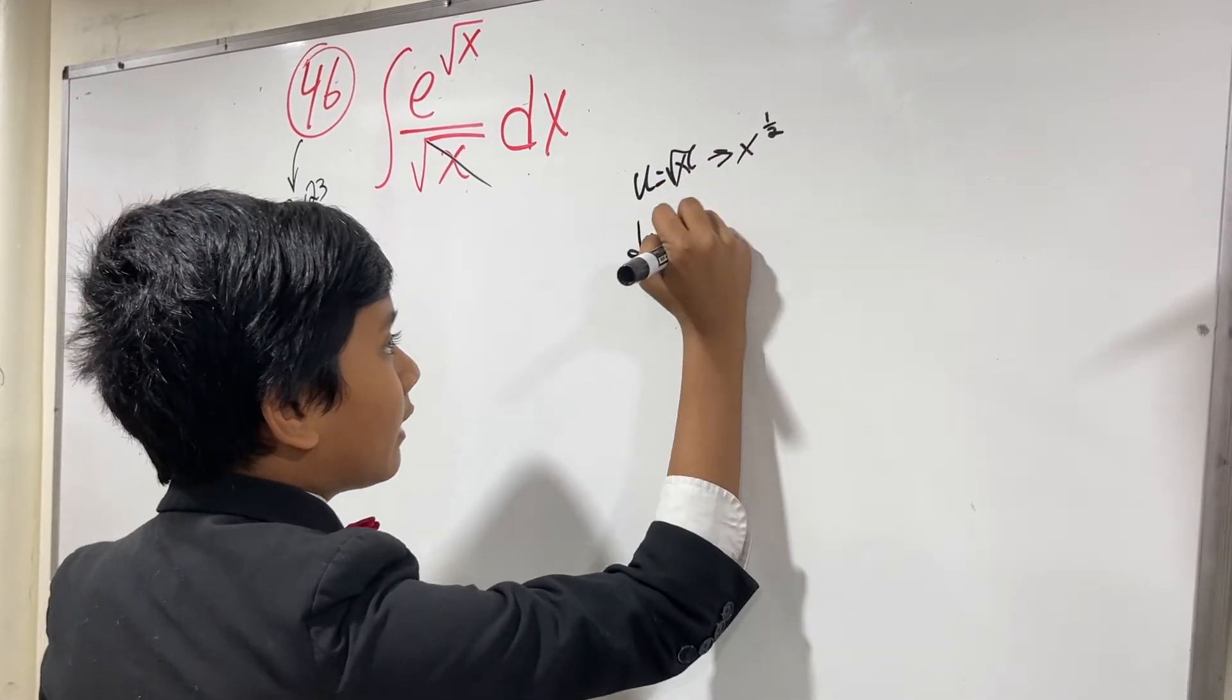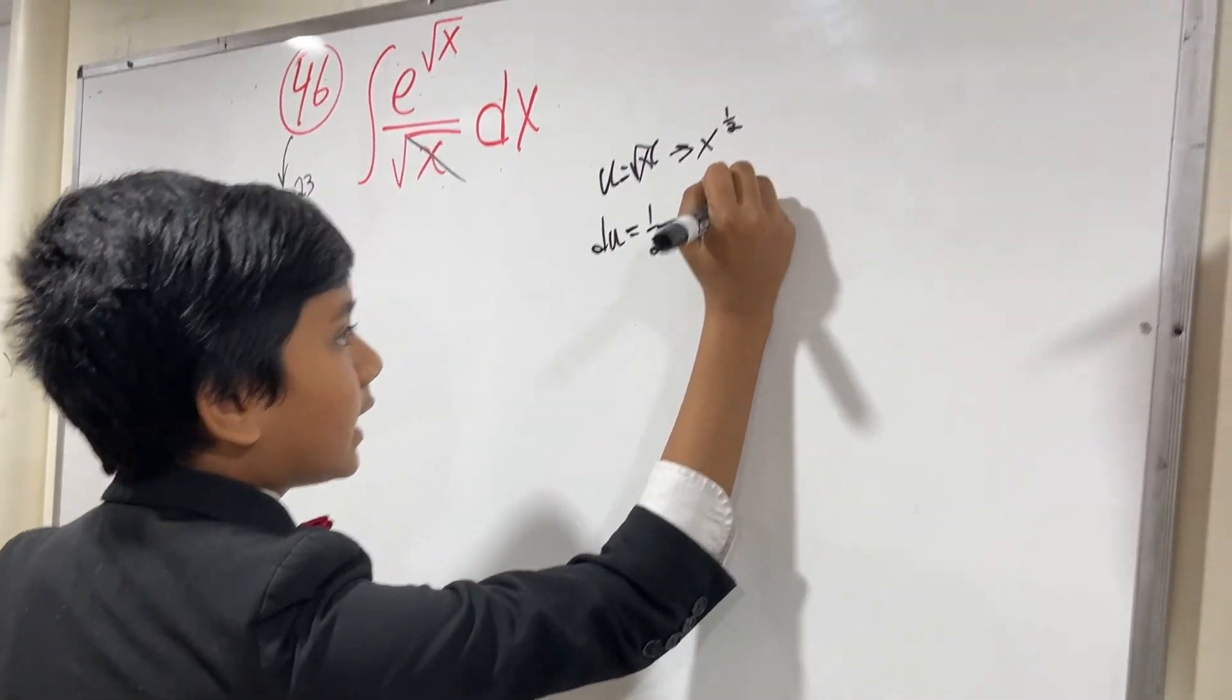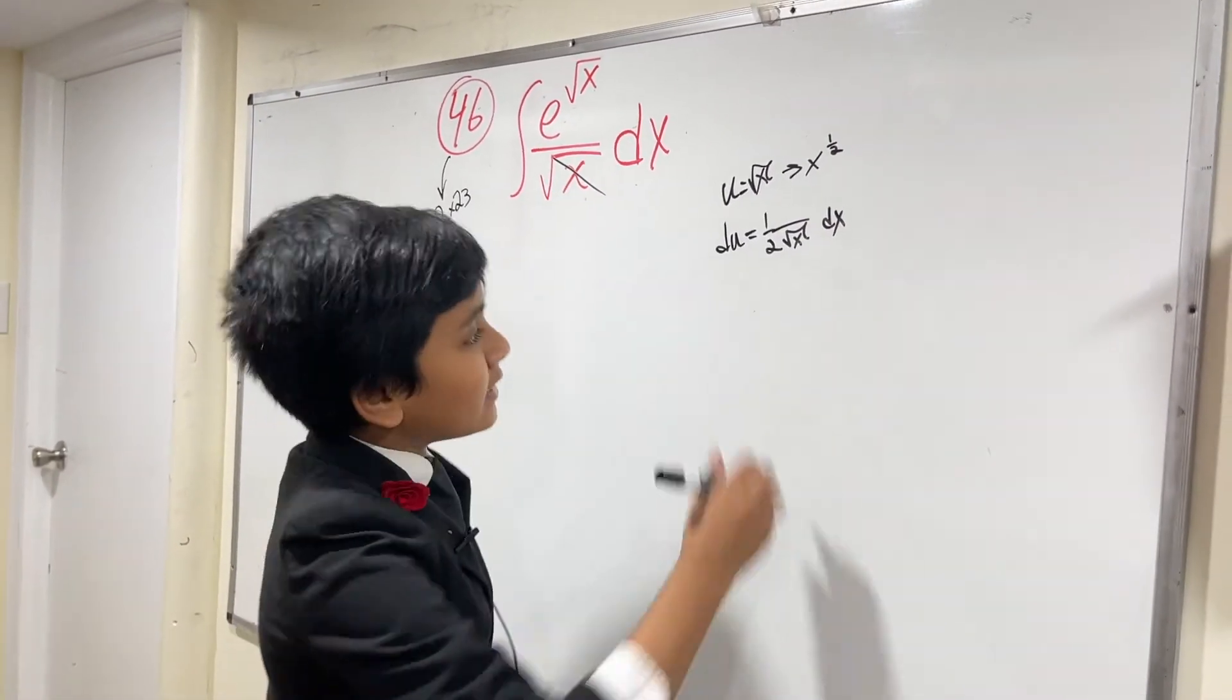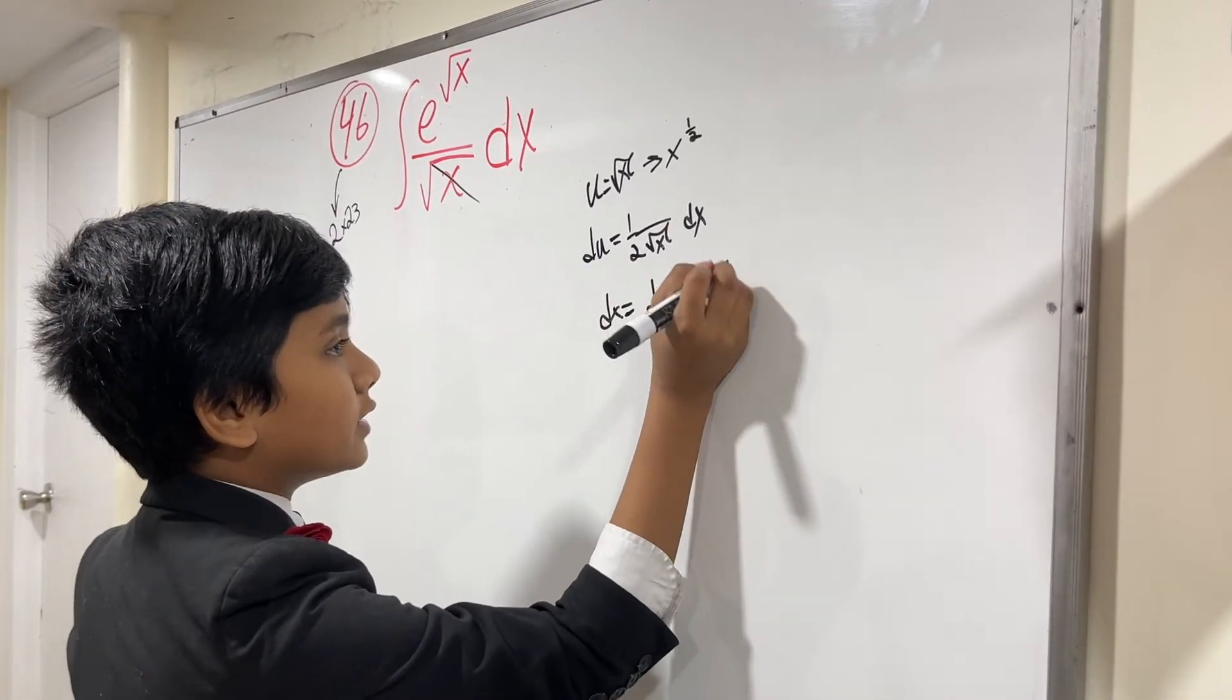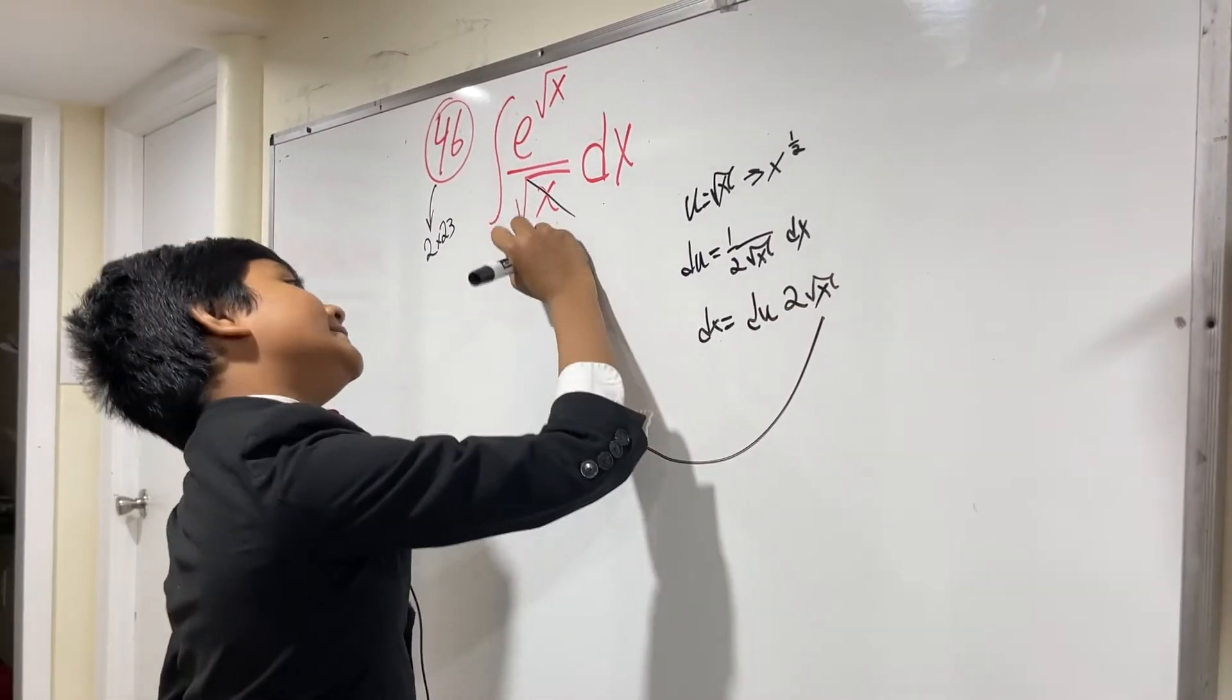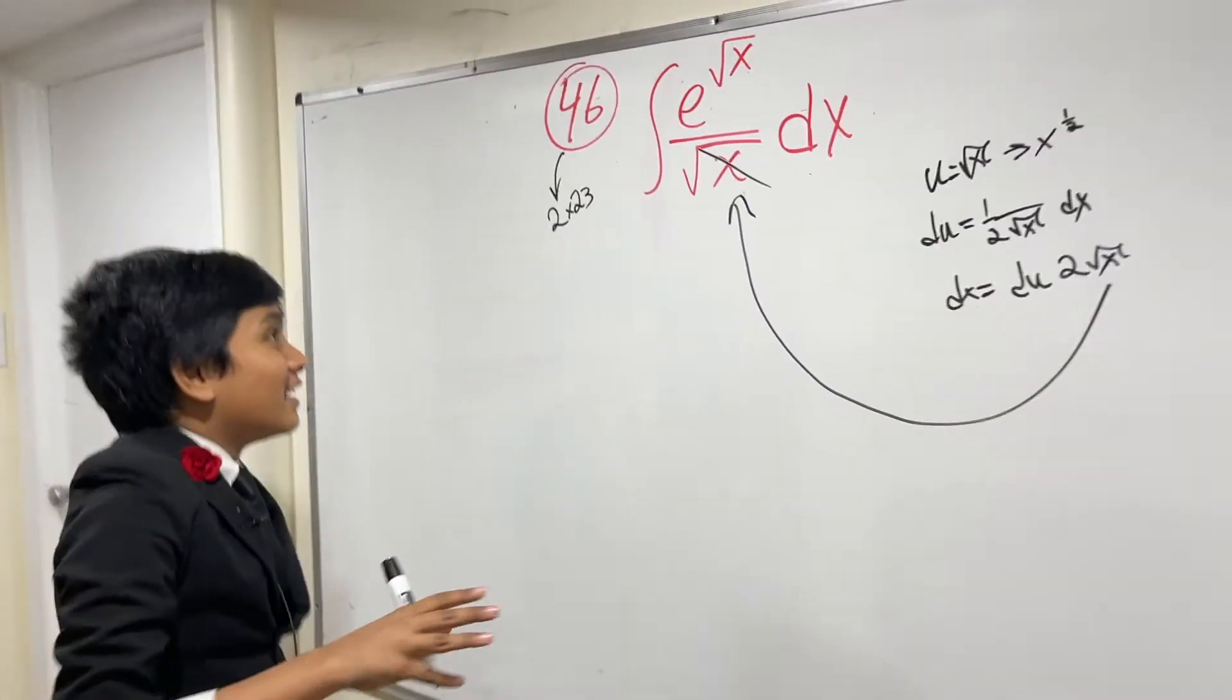...dx = 2√x du. Hopefully you can see the cancelling. Now we get the integral of e^√x, then cancel √x, and we have this 2 on the outside.